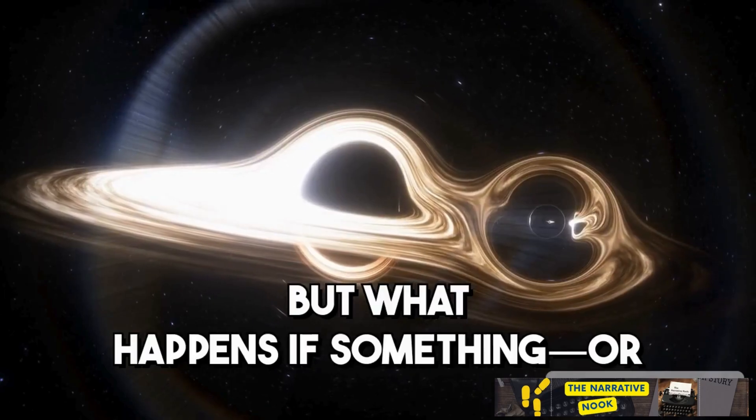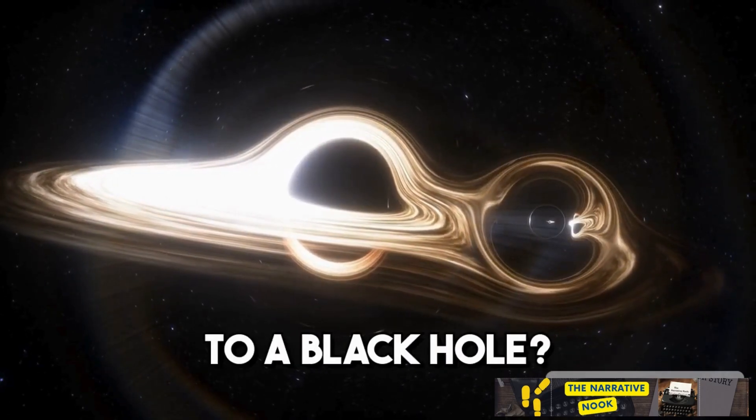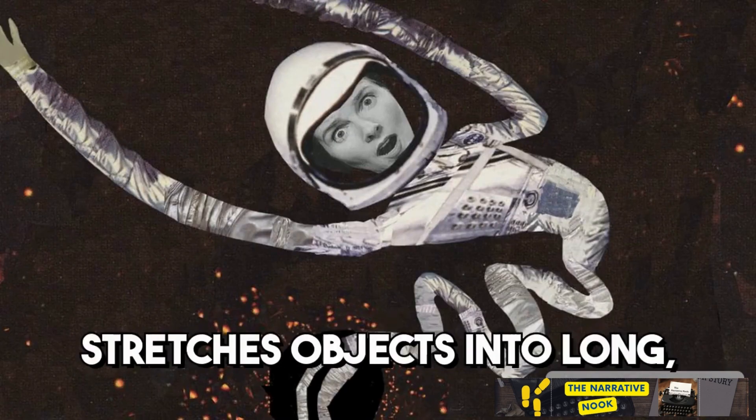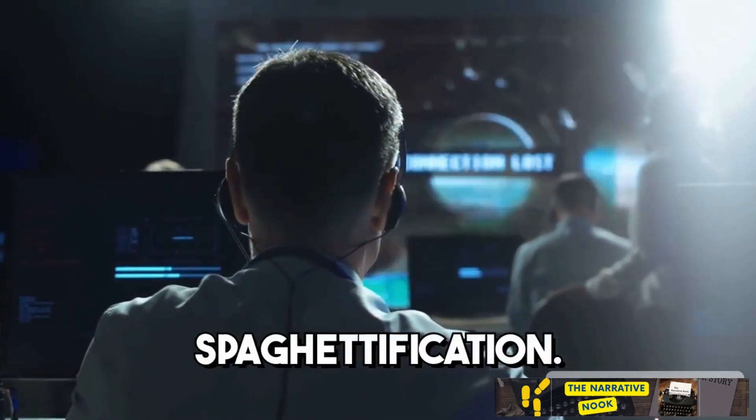But what happens if something, or someone, ventures too close to a black hole? The intense gravitational pull stretches objects into long, thin strands, a process scientists call spaghettification.